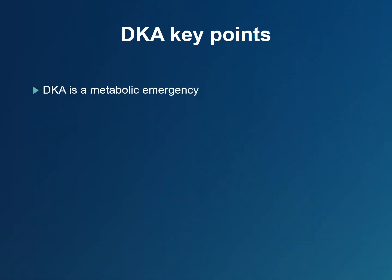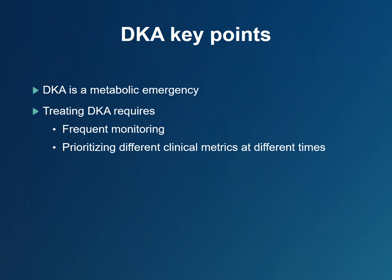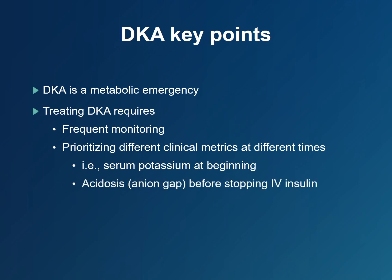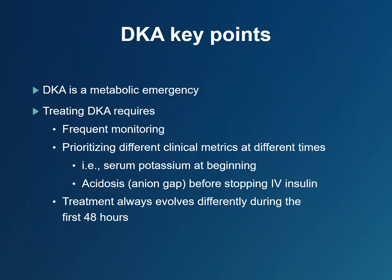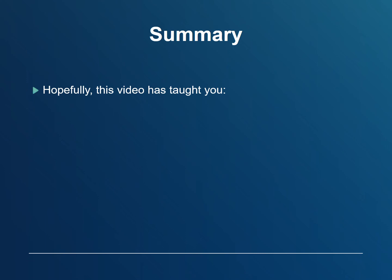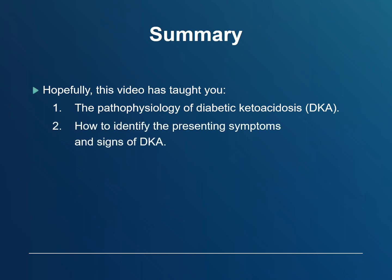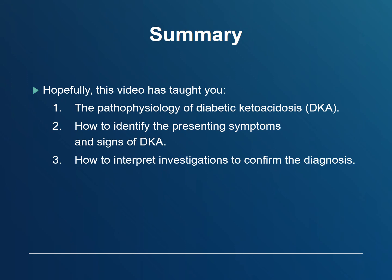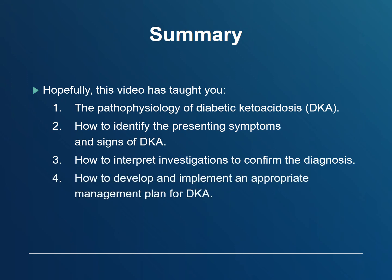DKA is a metabolic emergency. Treating DKA requires frequent monitoring and prioritizing clinical outcomes at different times during the course of treatment — for example, focusing on serum potassium at the beginning, or waiting for acidosis to resolve before stopping intravenous insulin. During the first 48 hours, every patient's clinical course is a bit different, which is why it is important to focus on the principles of management. Hopefully this video has taught you the pathophysiology of diabetic ketoacidosis, how to identify the presenting symptoms and signs of DKA, how to interpret investigations to confirm the diagnosis of DKA, and how to develop and implement an appropriate management plan for DKA.